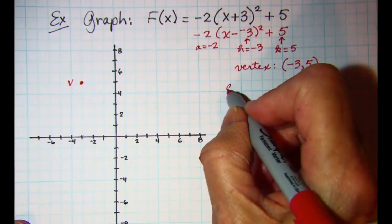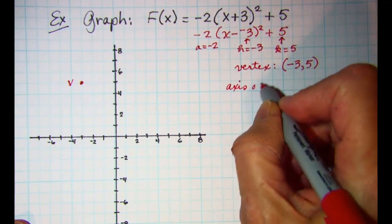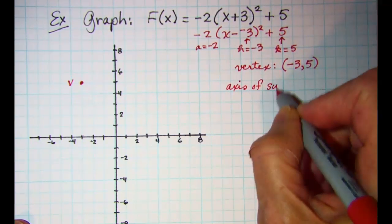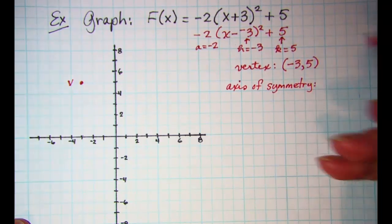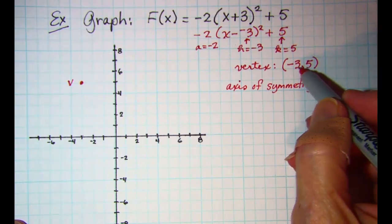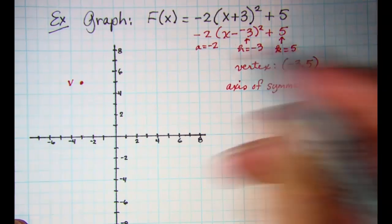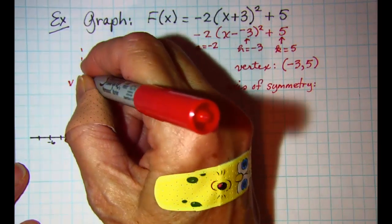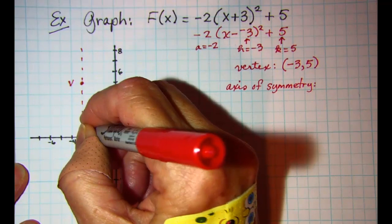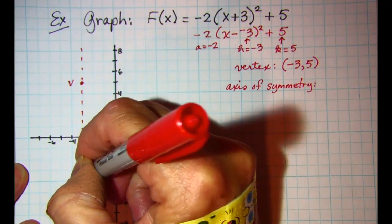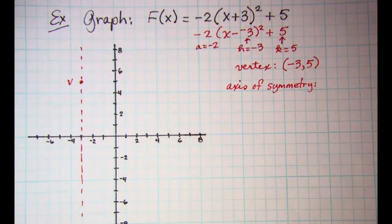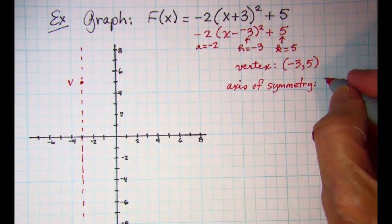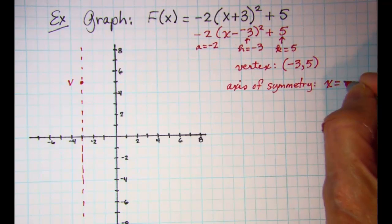The axis of symmetry is the vertical line that goes through this point. So we see that our axis of symmetry x equals negative 3 is right here, and the equation of that line is x equals negative 3.